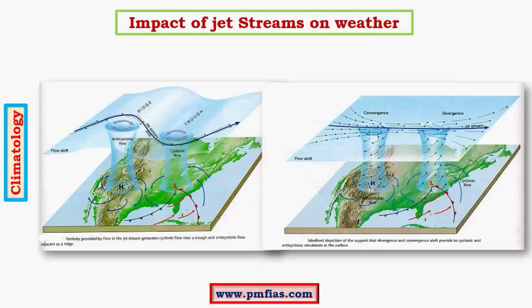We also have the jet streak, where the jet stream flows from a broad channel into a narrow channel and then exits into a very broad region. Where the jet streak enters from a broad region to a narrow region, we see convergence in the upper layers, which is associated with divergence at the bottom layers. Where the jet streak flows out of the narrow region, we see divergence in the upper levels associated with convergence in the bottom layers.